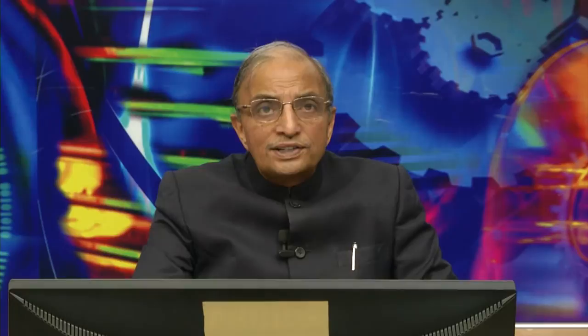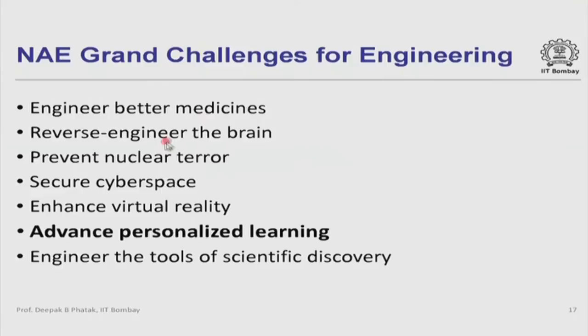Notice that all of these are complex problems — there are 14 challenges in total. The remaining seven include: engineer better medicines; reverse engineer the brain, which is the most ambitious challenge — understanding how the brain functions so we can better appreciate how learning or decision-making happens; preventing nuclear terror; and securing cyberspace.